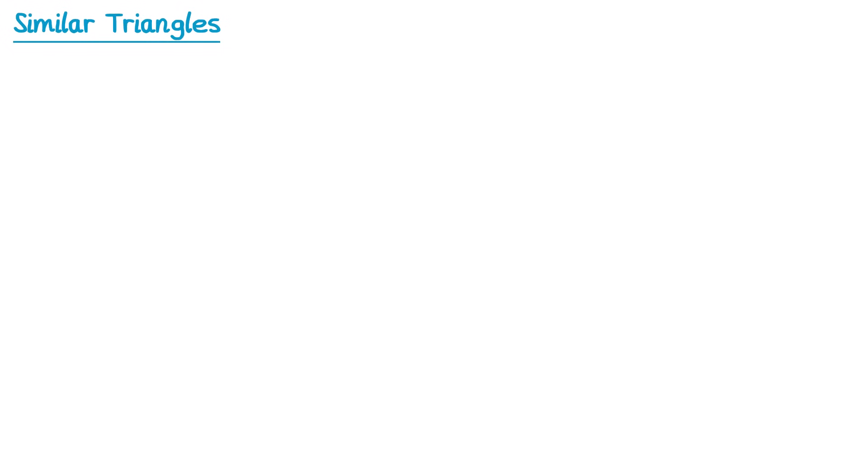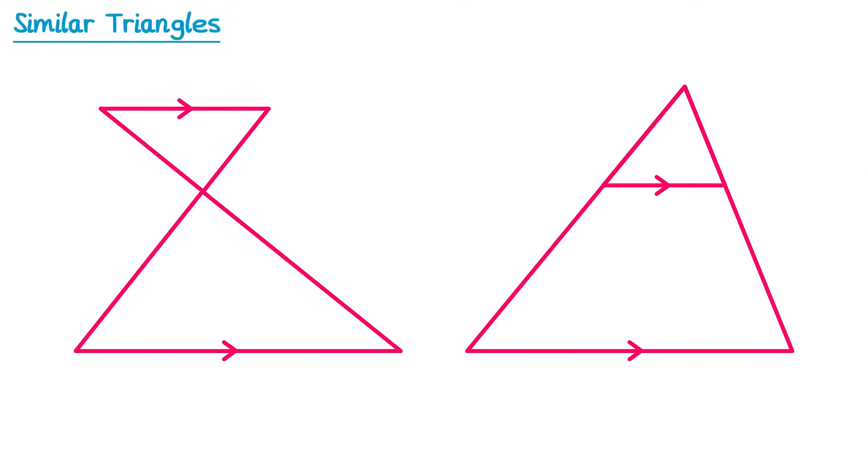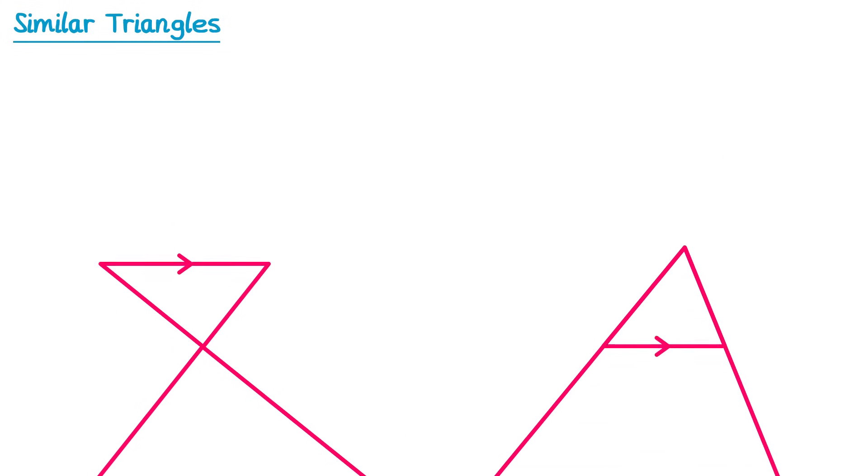In this video we're going to look at similar triangles. We're going to look at two types of problem: ones where the triangles are connected and ones where they overlap. Before we do this we're going to take a closer look at what it means for two triangles to be similar.